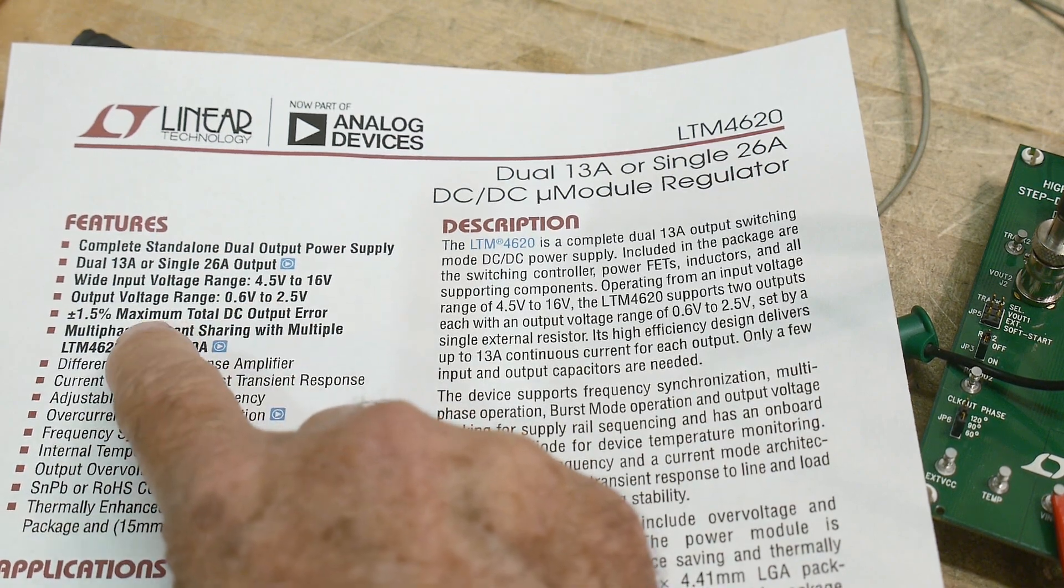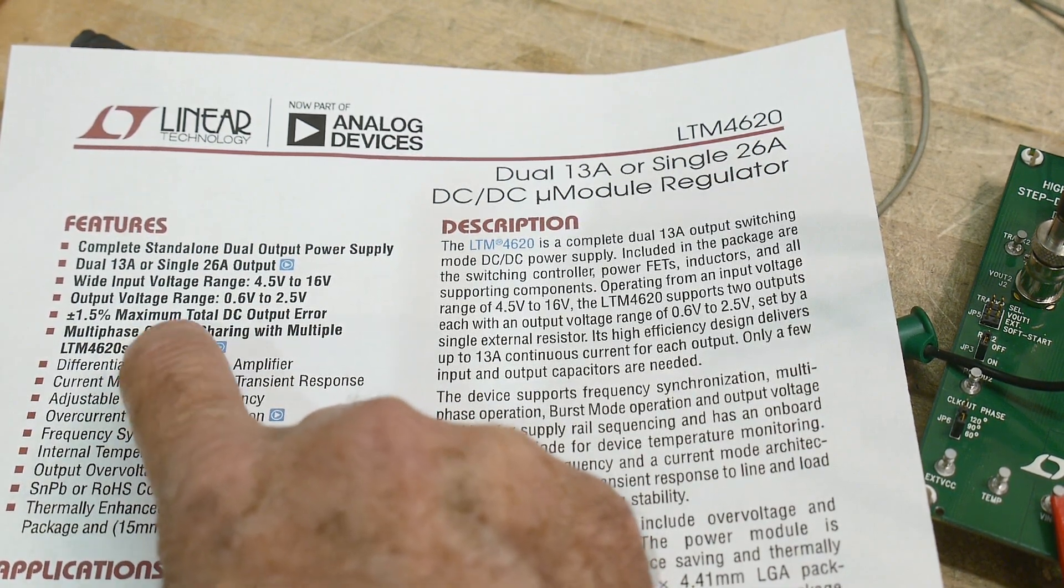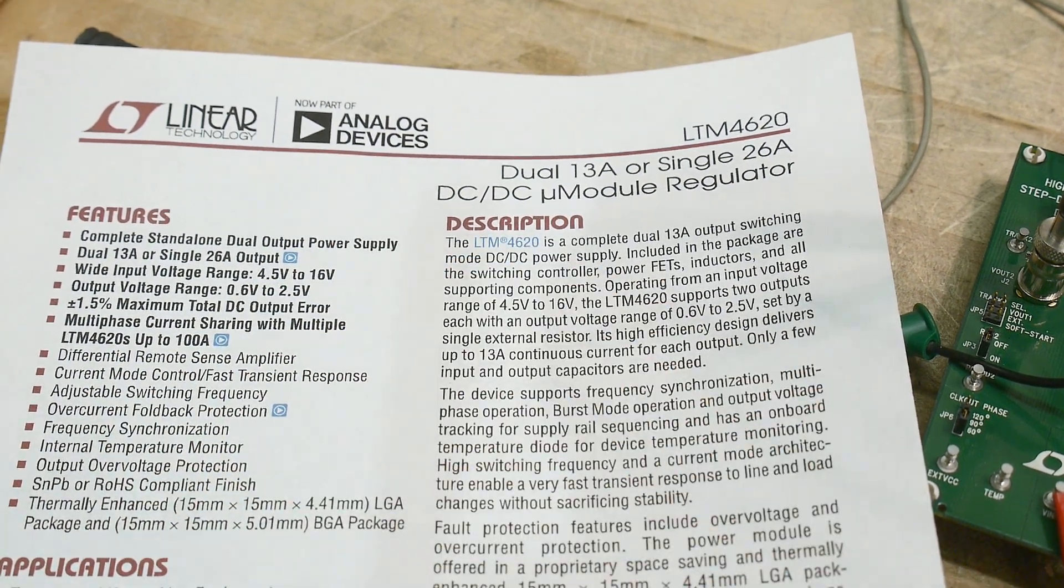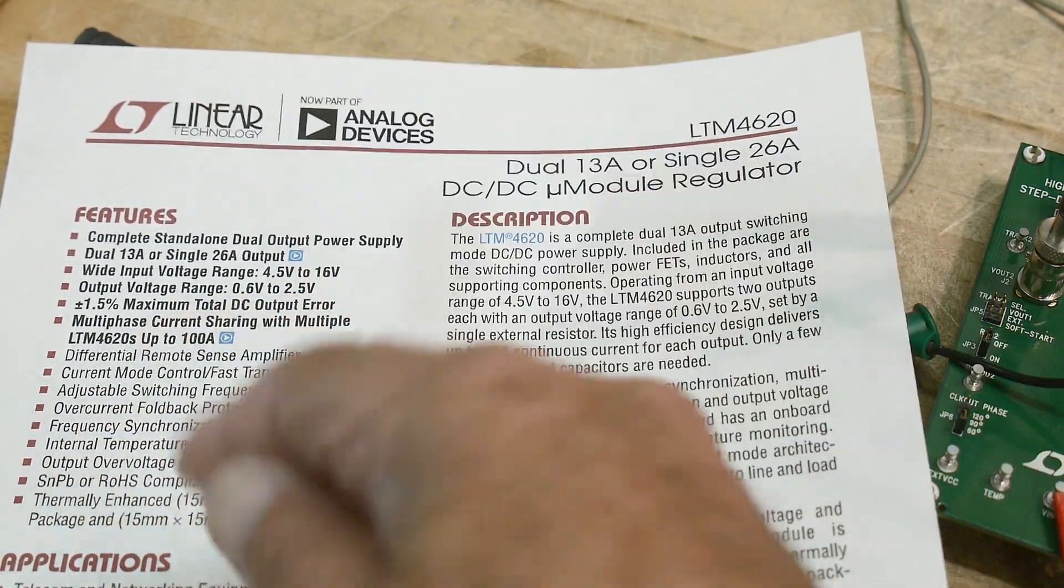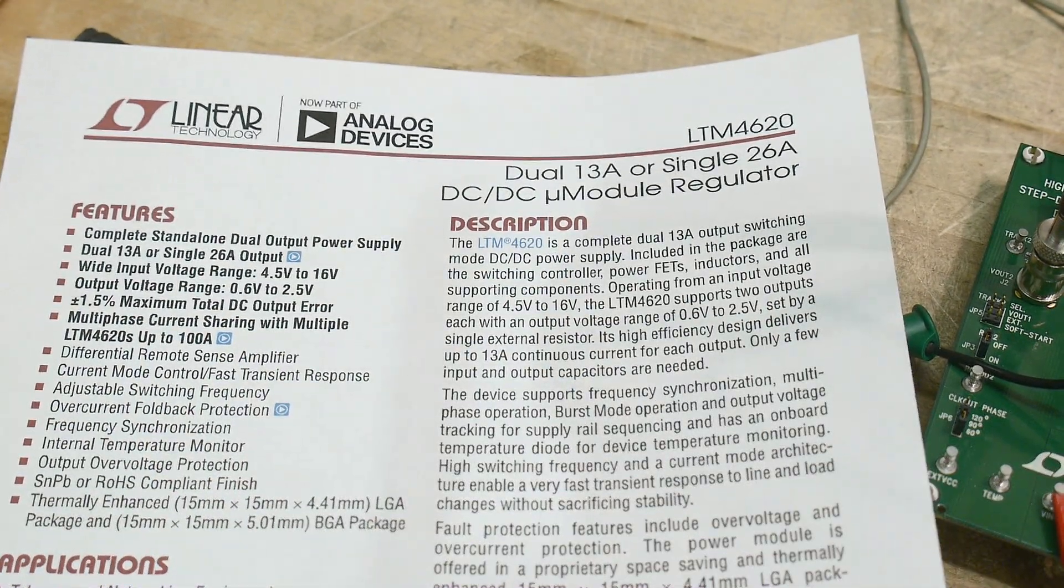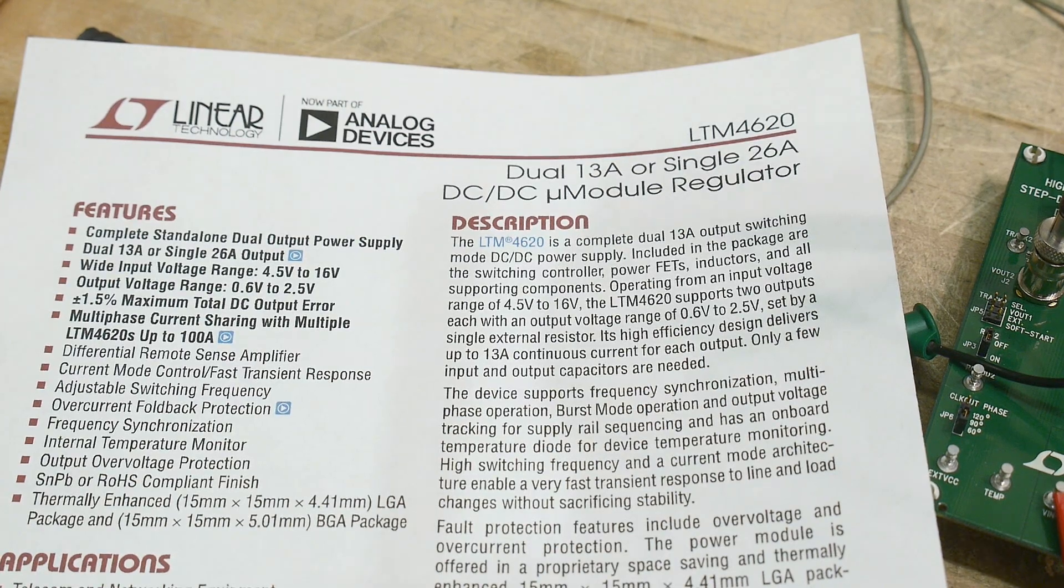Let's see here. DC error. And you can stack these things up. You can share the clocks between different parts. Get up to 100 amps total. Yeah, like I said, it is a beast.